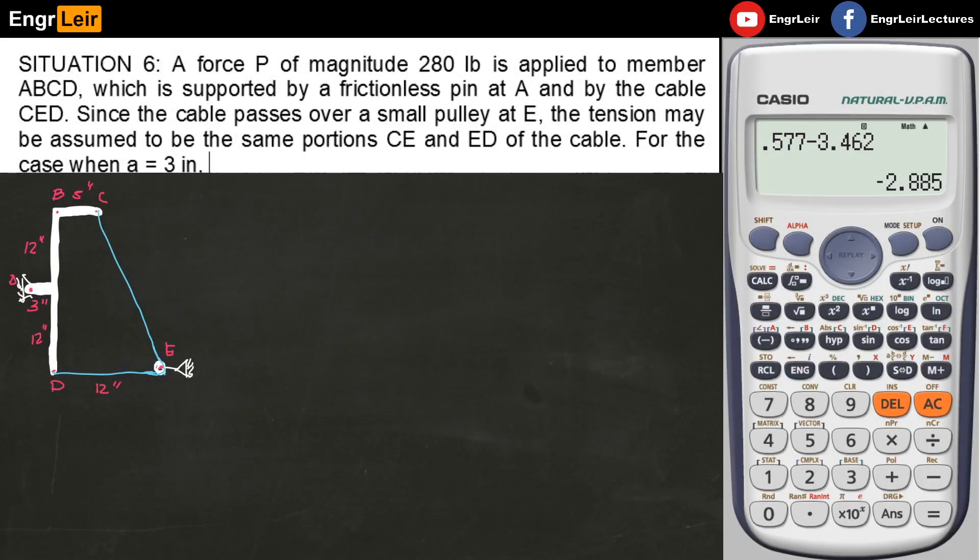Situation 6: A force P of magnitude 280 pounds is applied to member ABCD. A is supported by a frictionless pin at A and by the cable CED. Now, the cable CED is looped over a pulley, so we can assume the tension in CE and the member ED are the same because it's just a pulley.